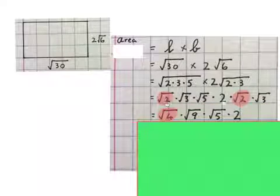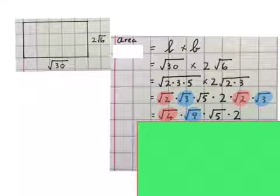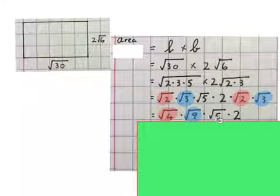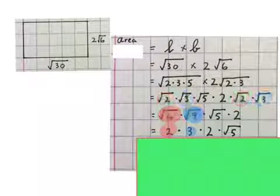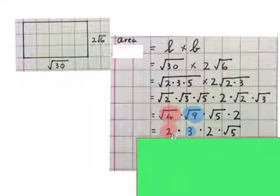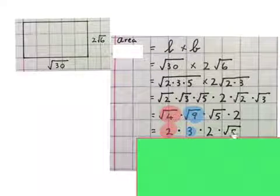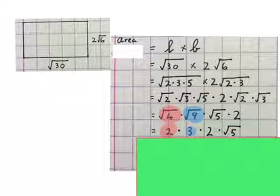The root of two times the root of two will give me the root of four. The root of three times the root of three will give me the root of nine. We'll keep the square root of five and keep the two. The square root of four is two. The square root of nine is three. Keep the two and keep the square root of five and times this out.